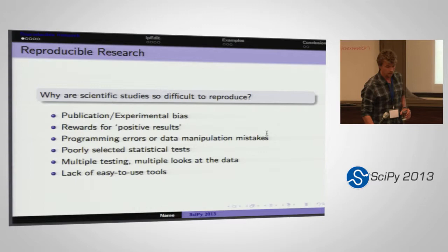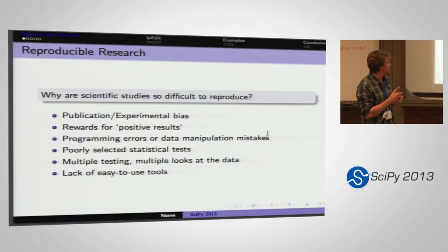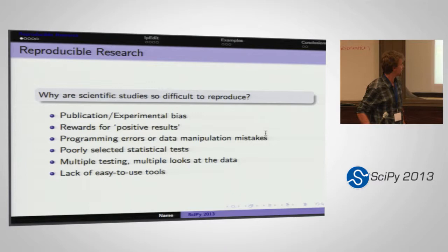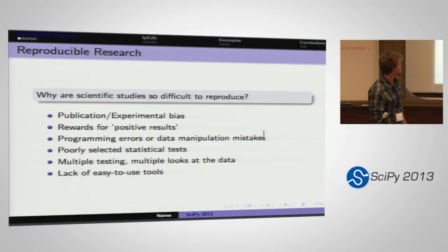Let's talk about why scientific studies are difficult to reproduce. There is an experimental bias, a publication bias, and certain hot areas of research that we focus on more. There's also the concept of p-values and the fact that we only publish significant results. I'm not here to specifically talk about the statistical aspects of reproducibility, but there are a whole number of problems we need to be aware of and keep in mind in our daily scientific routines.